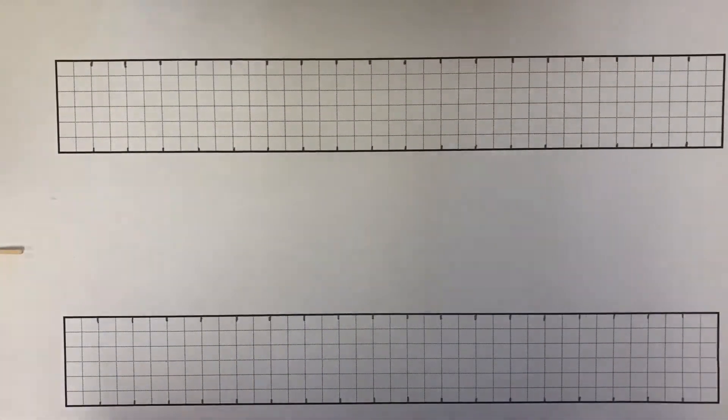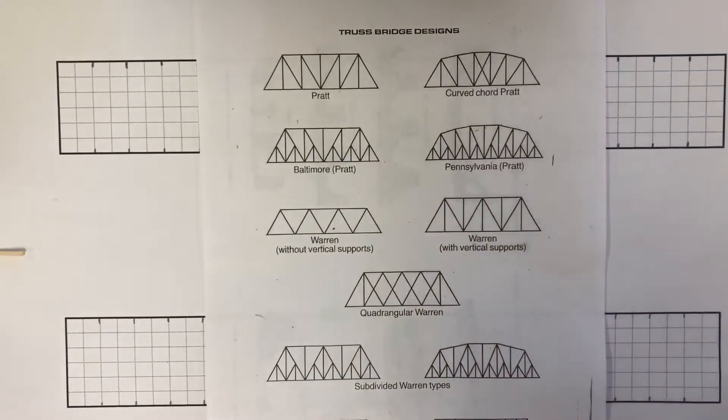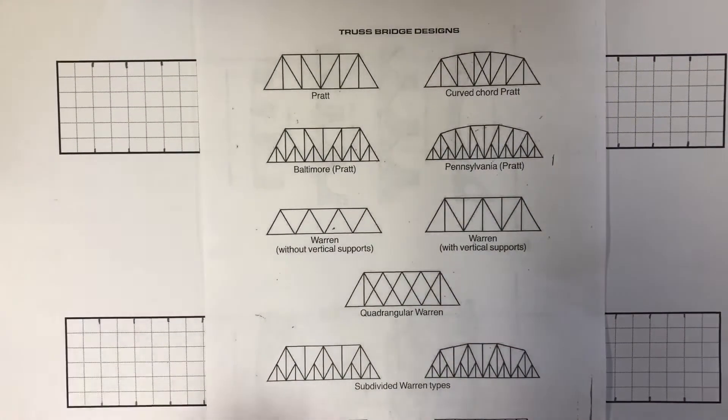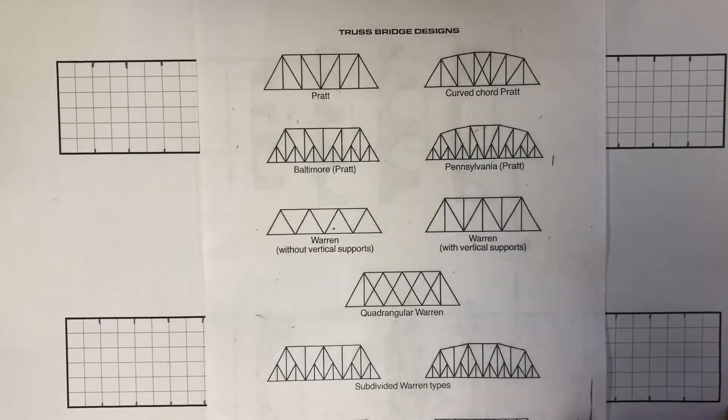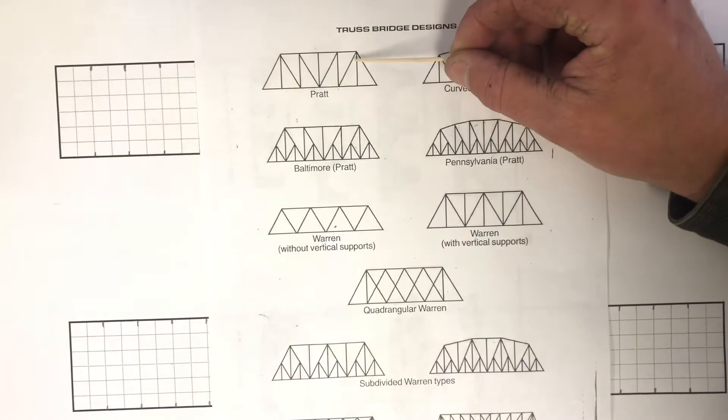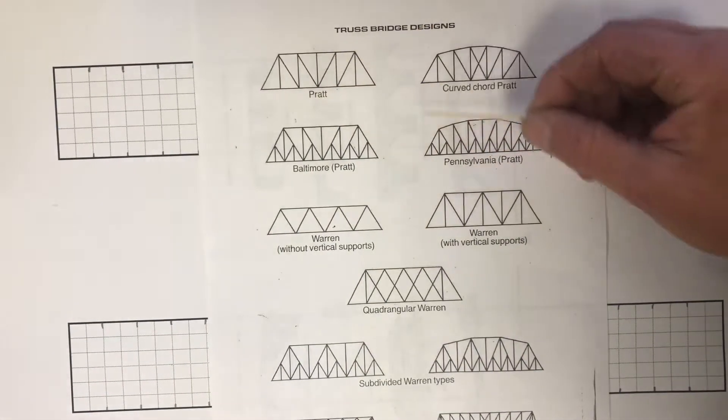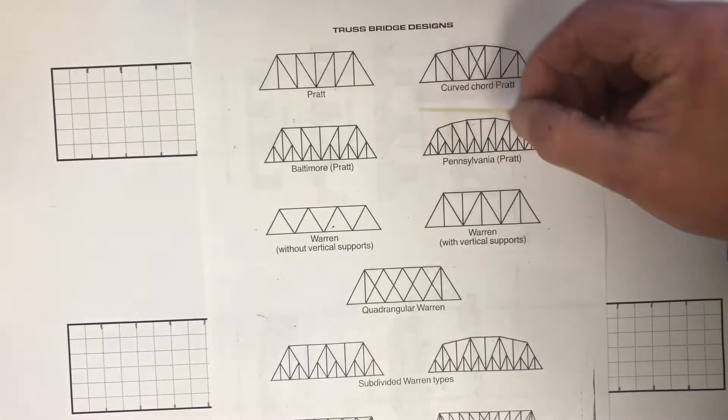The next step is I'm going to decide which type of bridge I am going to build. There are three basic styles of bridges. You have your prat, which has your diagonals going towards the center. Notice that it is comprised of triangles.